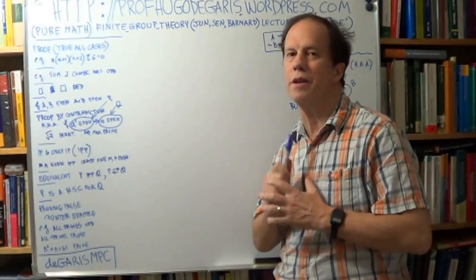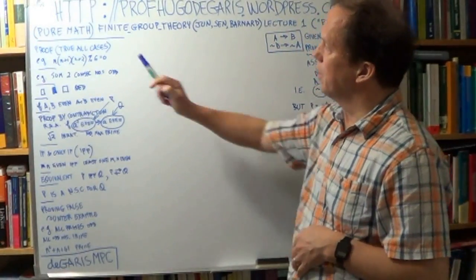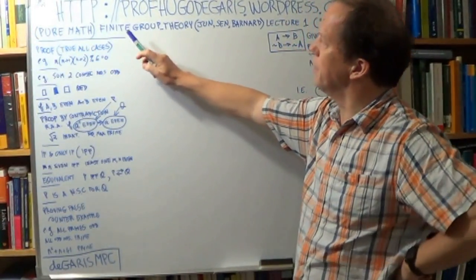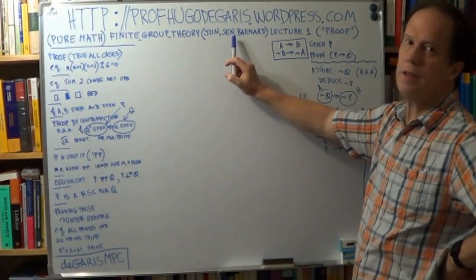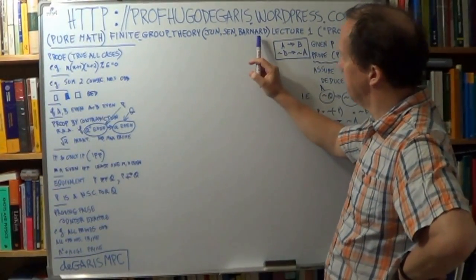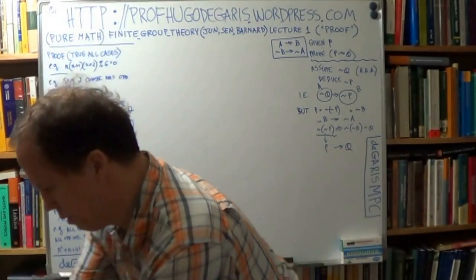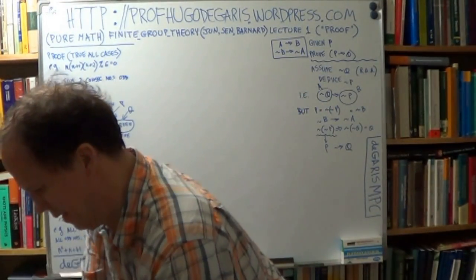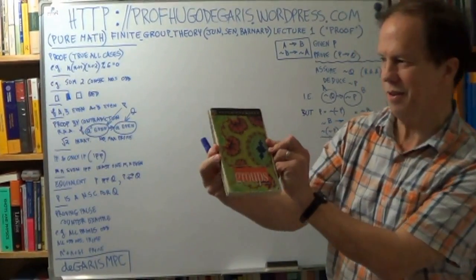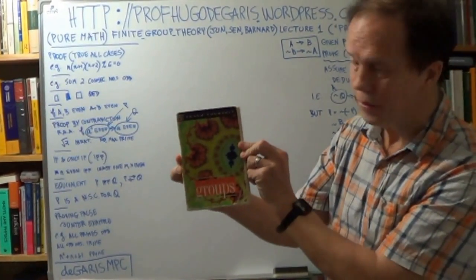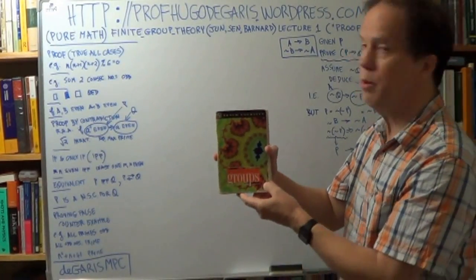This is the first real lecture on a real course. The course is in pure math, it's finite group theory at junior-senior level, and the main author is Barnard. I have the text here. It's in the Teach Yourself series called Mathematical Groups. If you want details,